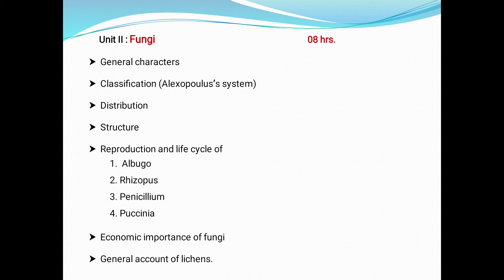Lichens are the symbiotic association of algal and fungal components. Fungi are usually multicellular eukaryotic organisms that are heterotrophs — they cannot make their own food and have important roles in nutrient cycling in an ecosystem. Fungi reproduce both sexually and asexually and have symbiotic associations with plants and bacteria. The unicellular fungus is yeast, the multicellular fungus is mold, and the fruiting body — commonly seen in the rainy season — is the mushroom.